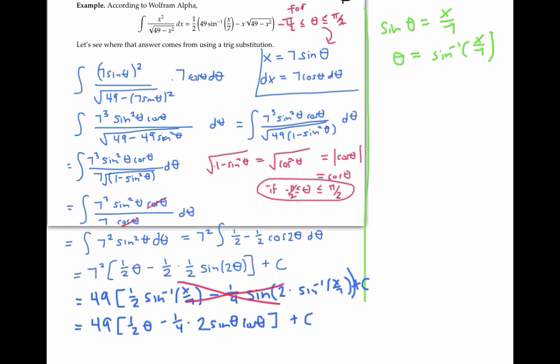Now there's one more trick we need to use. And that trick is to draw a right triangle. I'm going to label the sides of that triangle using the equation for the substitution we made, or this equivalent form that's a little easier to use.